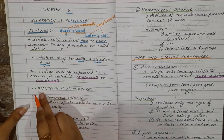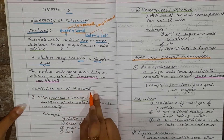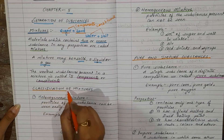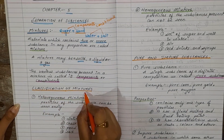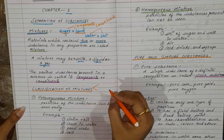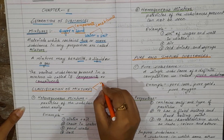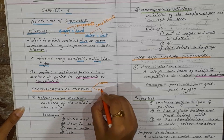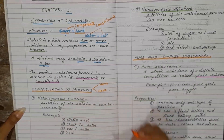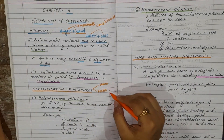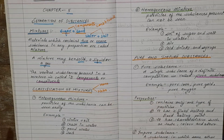Now, classification of mixture. Mixture is classified in two categories: one is homogeneous and another one is heterogeneous. First we will study about homogeneous mixture.